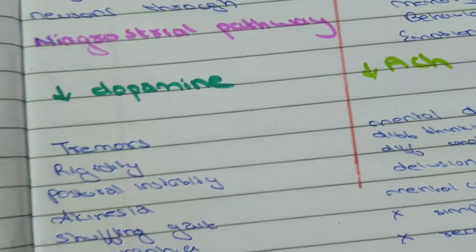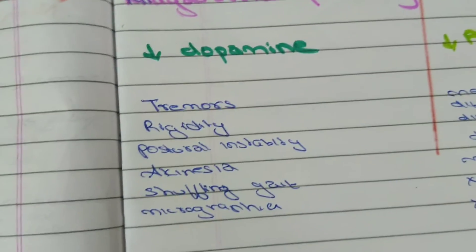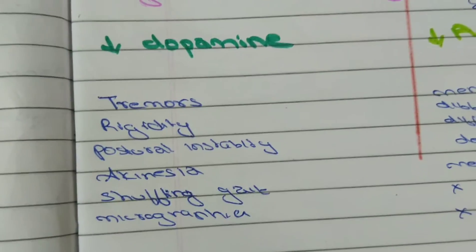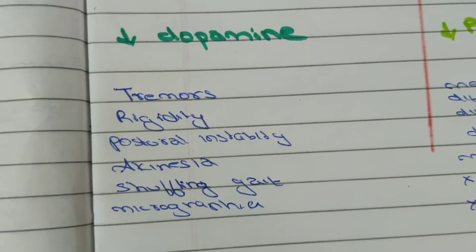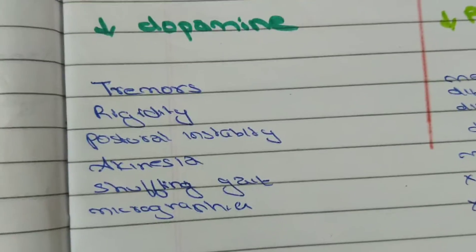Then postural instability - unstable while standing, or akinesia - loss or impairment of voluntary movement, or shuffling gait - dragging their feet as they walk, or micrographia - cramped handwriting.